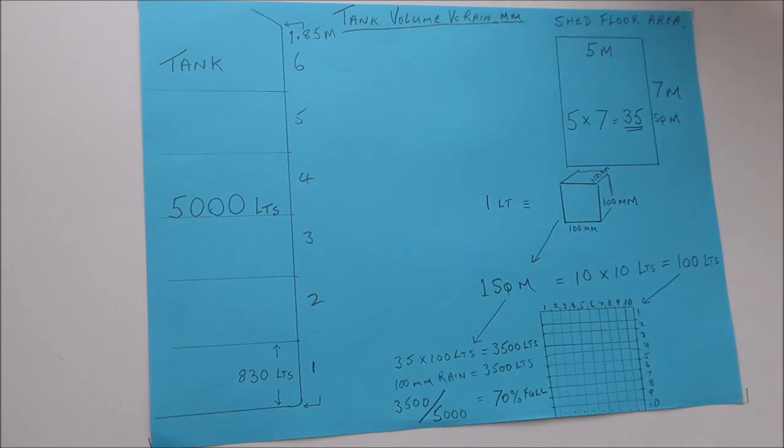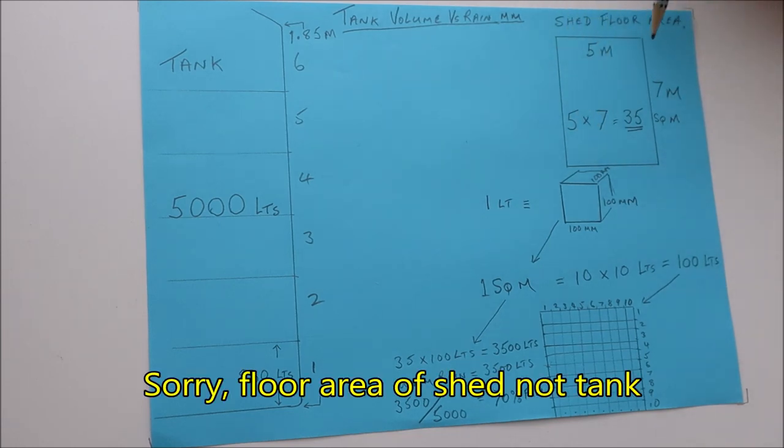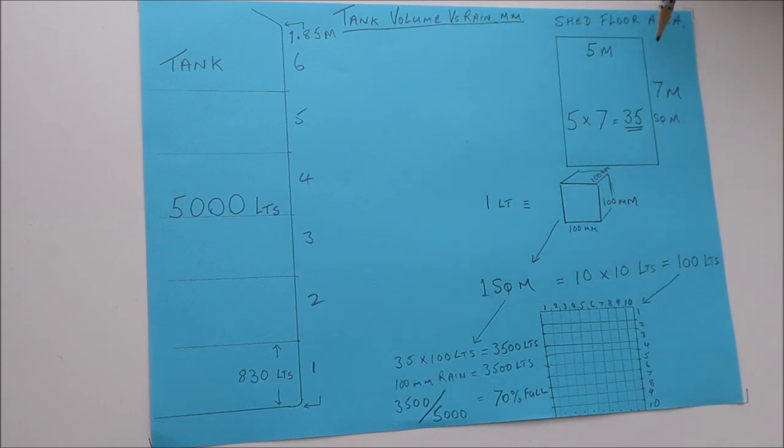To do that, first we have to know the floor area of the tank. It doesn't matter about the pitch of the roof and all that sort of thing, because in theory you're only going to get that amount of rain that's equivalent to the floor area plus a little bit for the gutters on each side, but we'll take that out of the equation. The shed dimensions are 5 meters by 7 meters, which gives us 35 square meters.